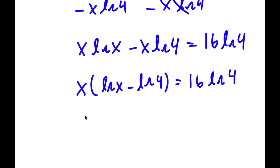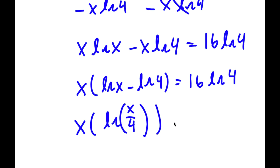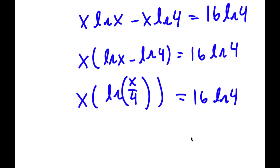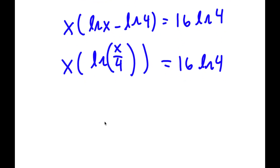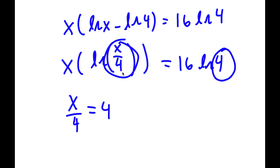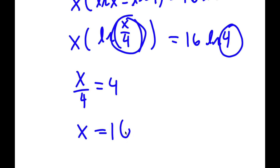Now ln x minus ln 4 simply equals ln(x over 4). So I have x times ln(x over 4) equals 16 times ln 4. This is essentially saying x over 4 equals 4, and these two sides must match up, so x over 4 equals 4 means x equals 16.